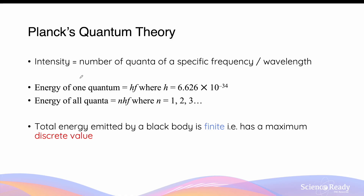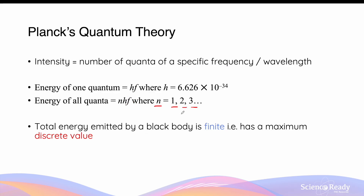Planck suggested that the intensity of blackbody radiation is determined by the number of quanta of a specific frequency or wavelength. This contrasts with the classical model, which proposed intensity is inversely proportional to wavelength. The total energy of all quanta of a particular frequency is n × hf, where n is the total number of quanta with that frequency. The value of n must be a whole number, making total energy finite with a discrete maximum value.